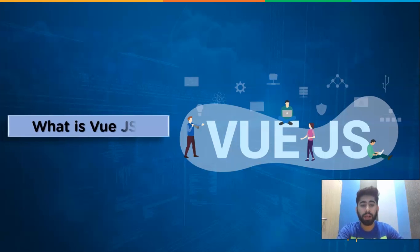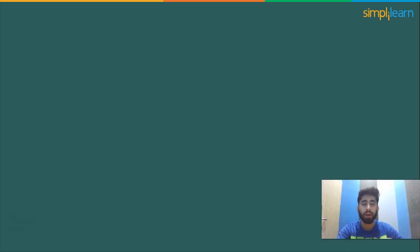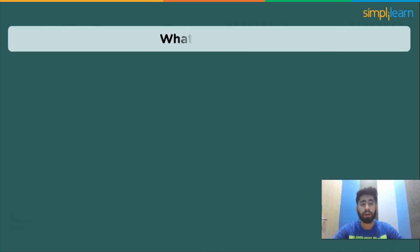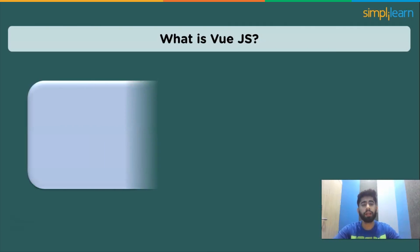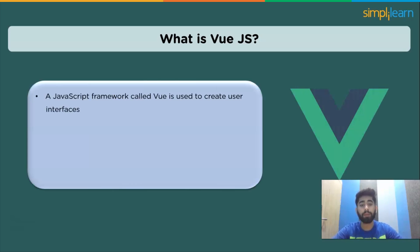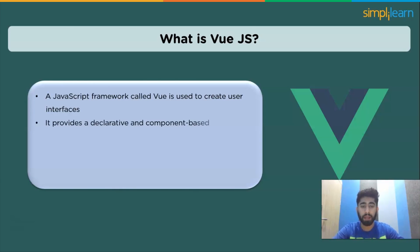It also provides reusable code components, a universal development environment, compilers, toolsets, code libraries, APIs, and more. Now let's move on to what is Vue.js. Vue.js is a JavaScript front-end framework used to create user interfaces. It provides a declarative and component-based programming approach that enables you to quickly create user interfaces no matter how straightforward or complex they may be.